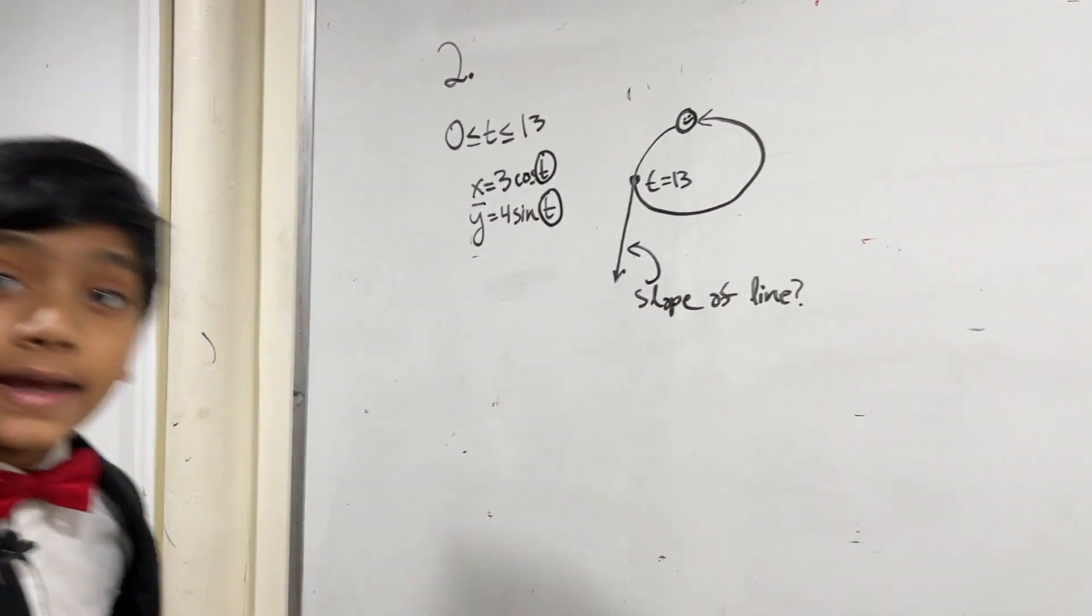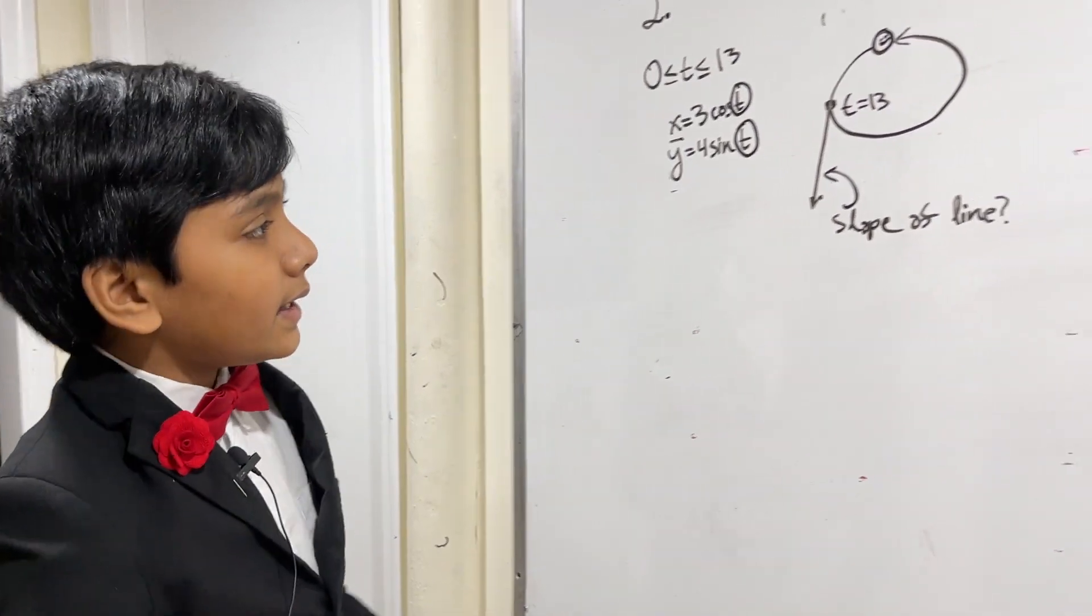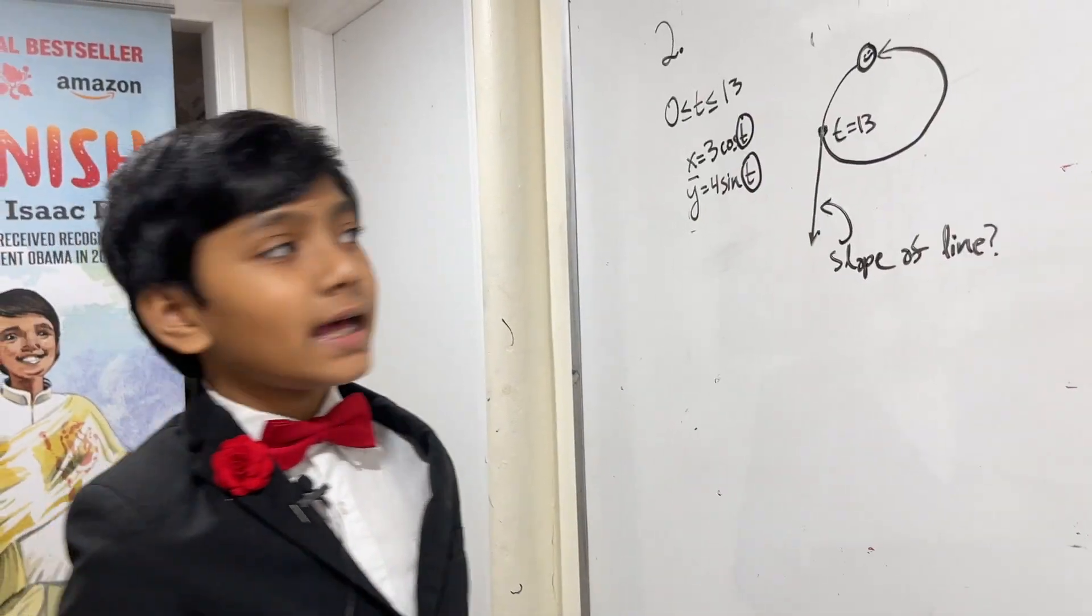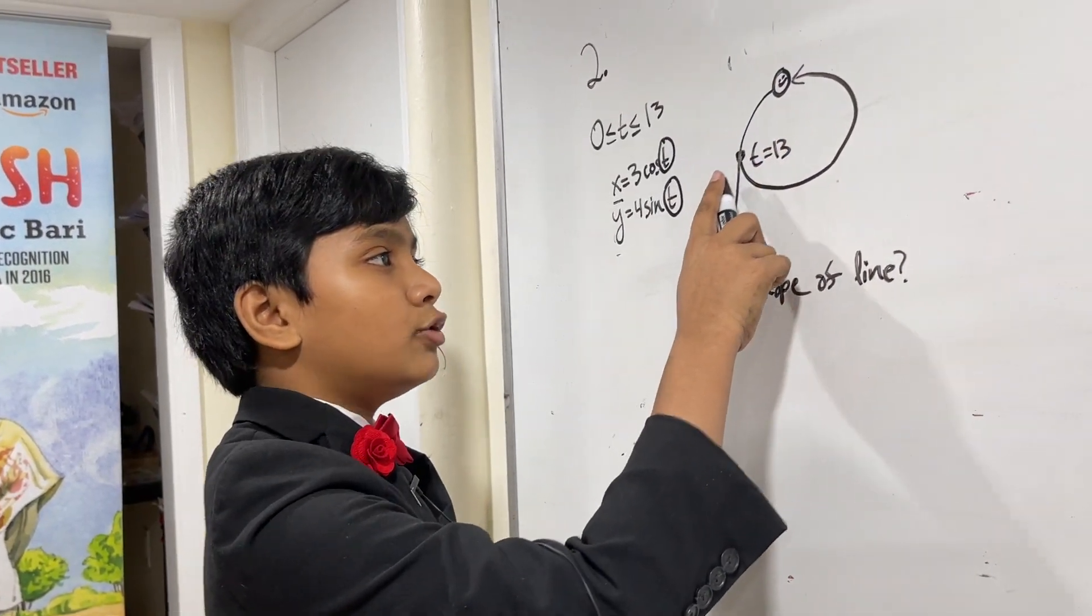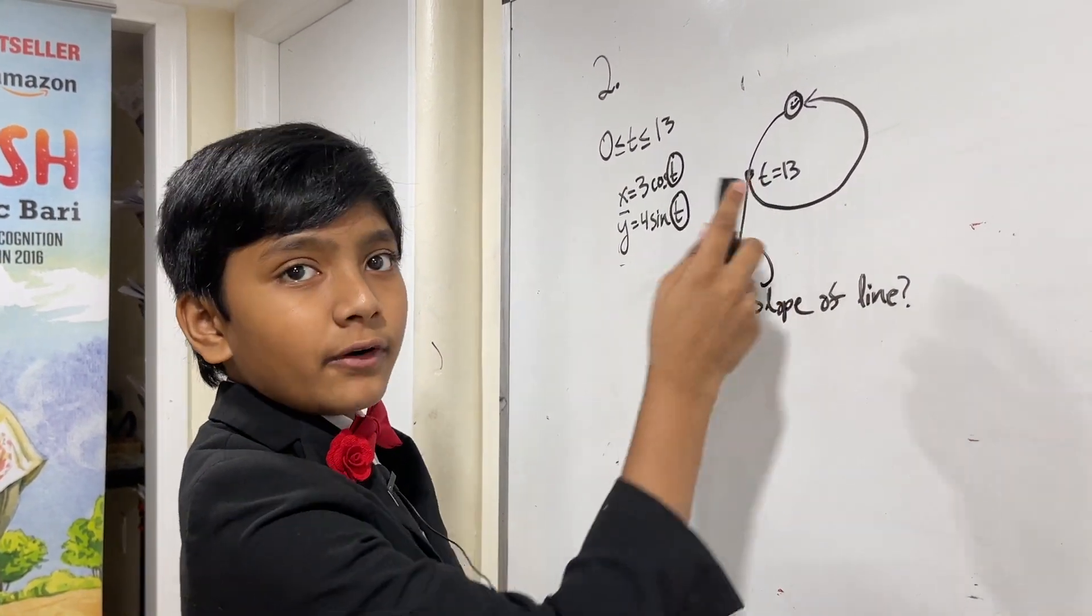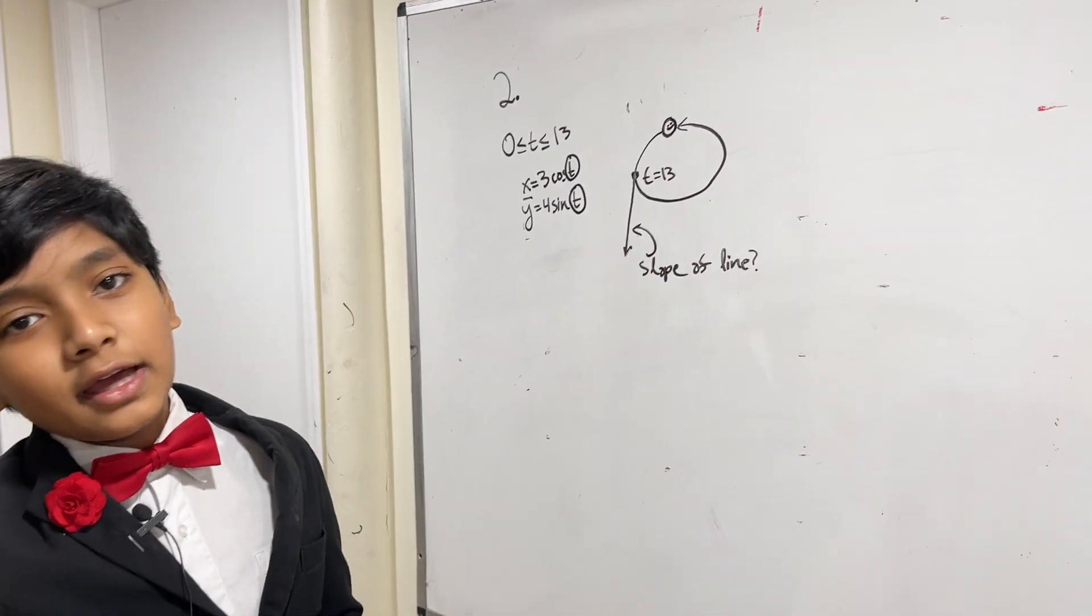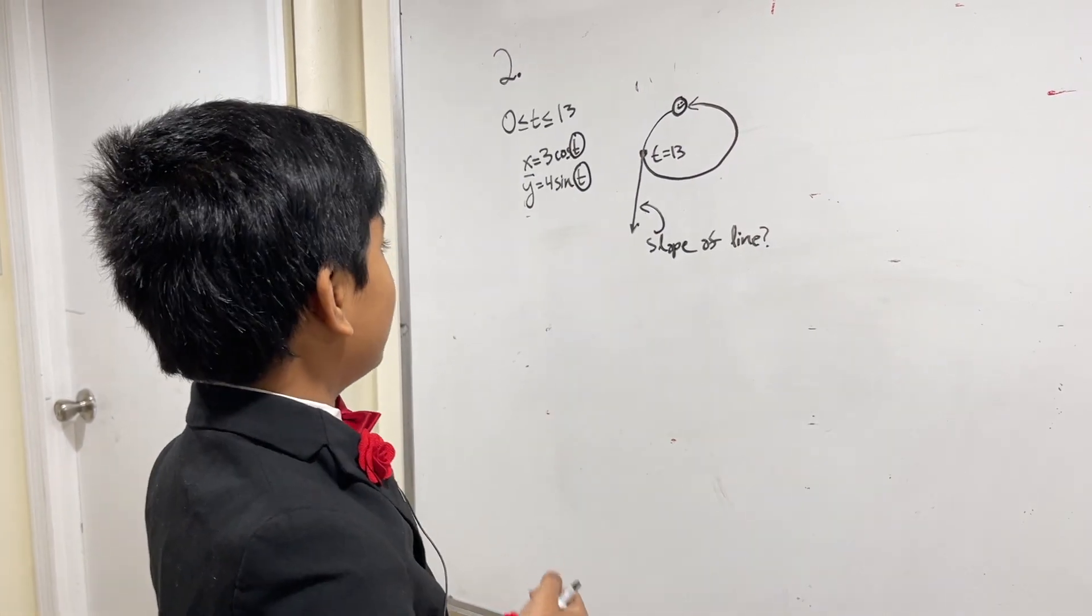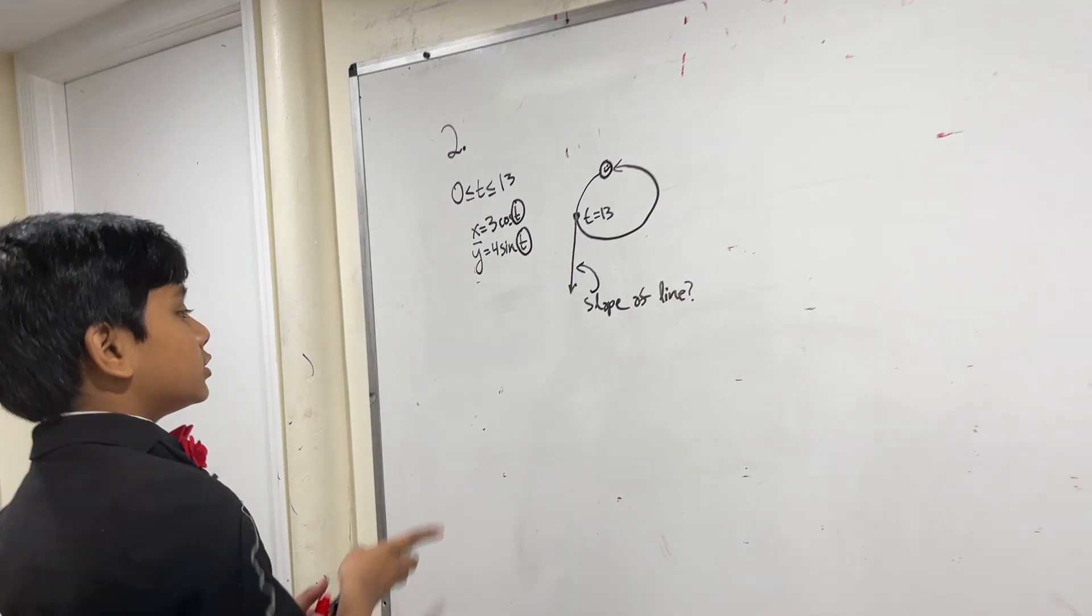Now, all we have to basically do here is find the tangent at t equals 13. Why? Because our particle buddy was leaving on the tangent line to the curve at t equals 13. That means all we have to do to find the slope is find the slope of the tangent line at 13. How do we find the slope?